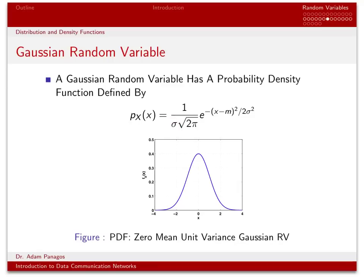The parameter sigma describes how spread out the random variable is. As sigma gets larger, this bell-shaped curve widens on the x-axis. As m changes, the location of the peak moves around. For instance, if we had a Gaussian random variable where m equals 2, the bell-shaped curve would be centered at 2 with some width set by the sigma parameter.